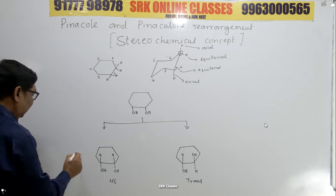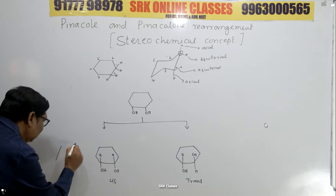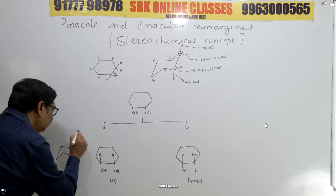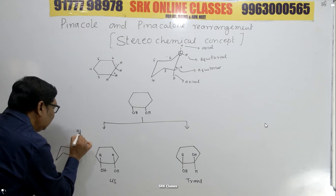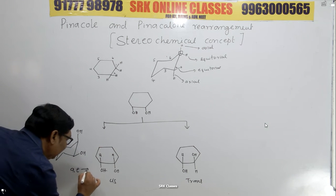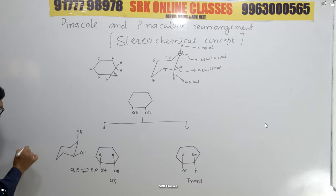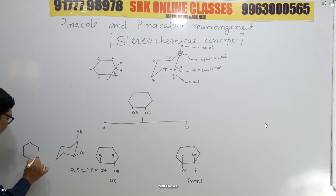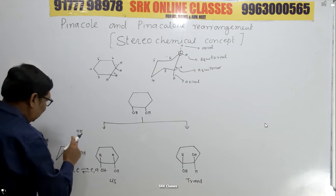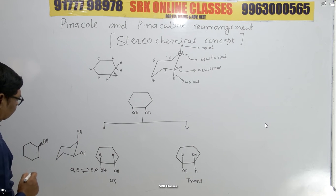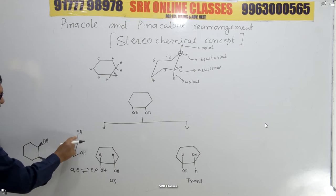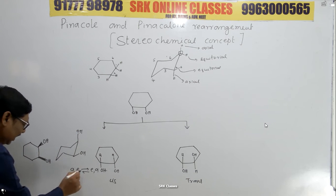This compound can be represented in chair form. In the cis form, one OH is axial and the second one is equatorial. The axial-equatorial arrangement will be rapidly converted into equatorial-axial. In normal representation, a thick line indicates OH above the plane and a dashed line indicates below the plane. Since both OHs are above the plane in the cis form, both are represented with thick lines.